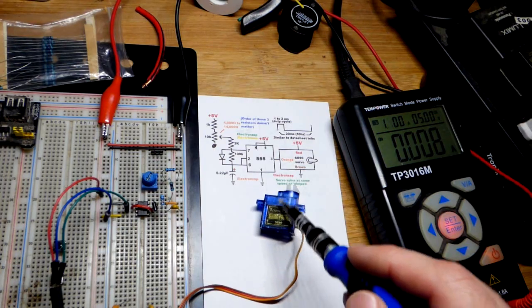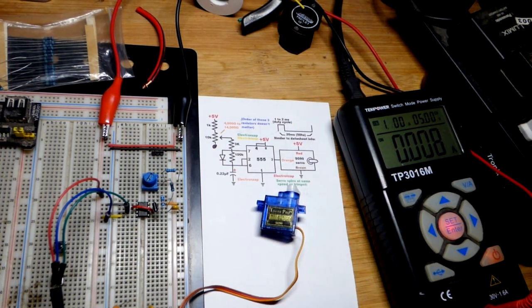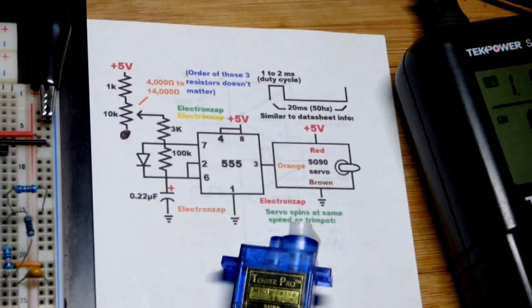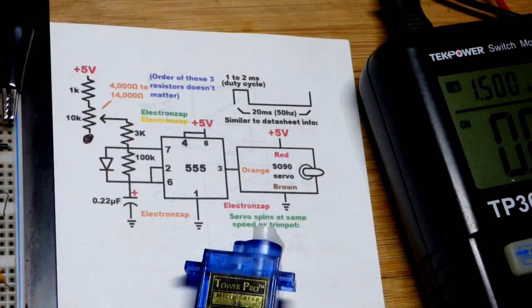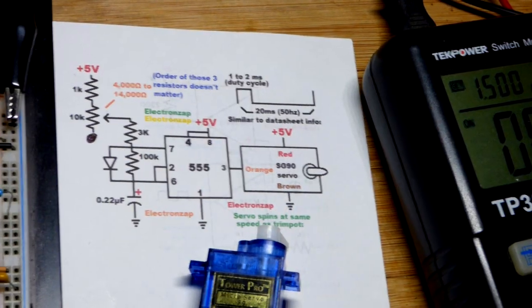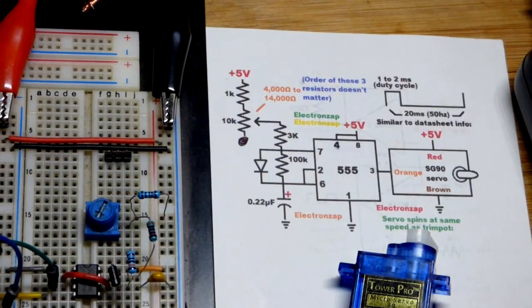Again, the position of the servo depends on pulses. I'll zoom back for those watching the shorts - we'll come closer. Those pulses are coming from the 555 timer. We need about 20 milliseconds low and only 1 to 2 milliseconds high right there.